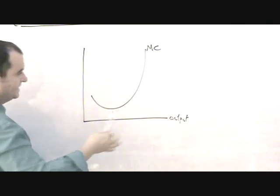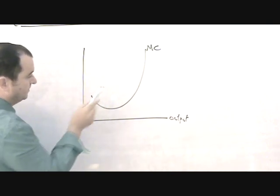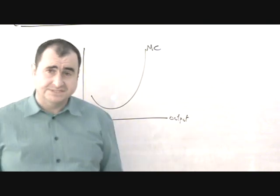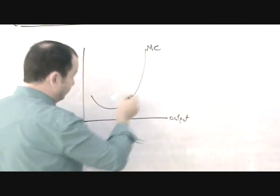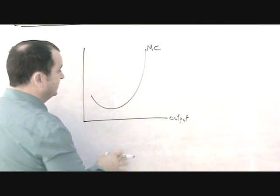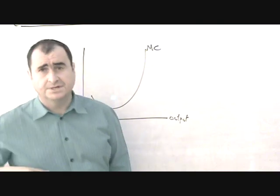But once diminishing returns sets in, the extra cost starts to rise and it rises very sharply, of course, because of diminishing marginal returns.